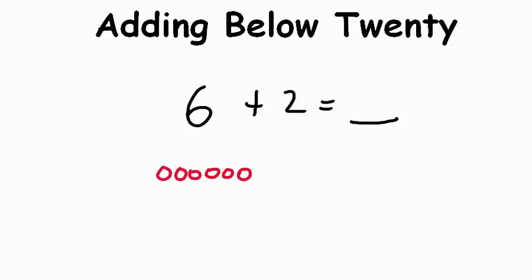And then we can just add on 2 more. If we count up, we have 6. Add 2 more. 7, 8. And our answer would be 8. That's one way we can add below 20.